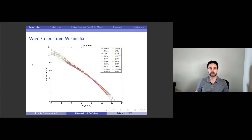Here we look at word counts from Wikipedia in more than 30 different languages, and you can see that all of them are basically straight lines with slopes of minus one. So Zipf's law is not just in English, but it's in many different languages — and not just in literary works, but also if you look at Wikipedia. We will look at these types of plots repeatedly in this talk.